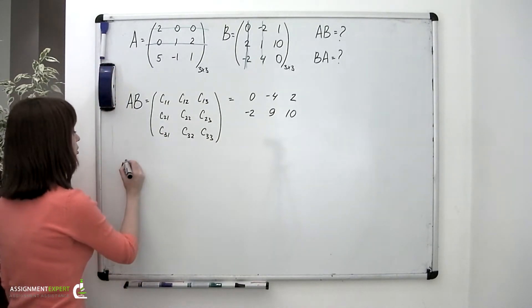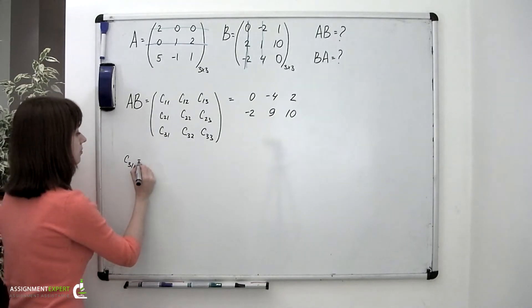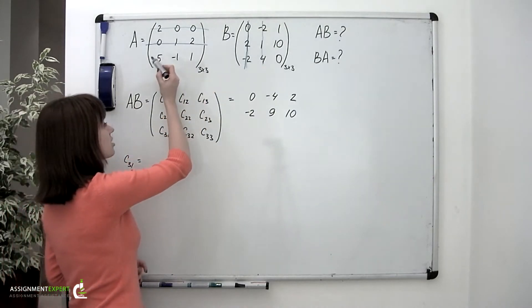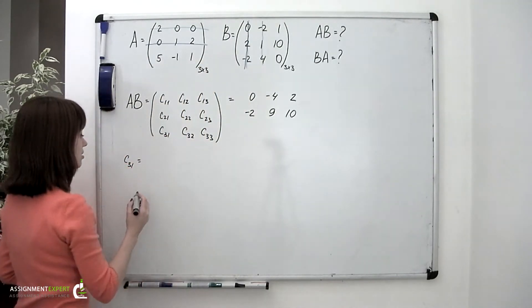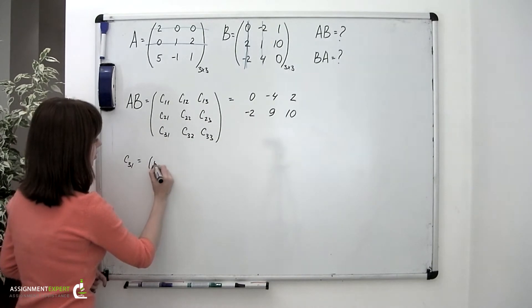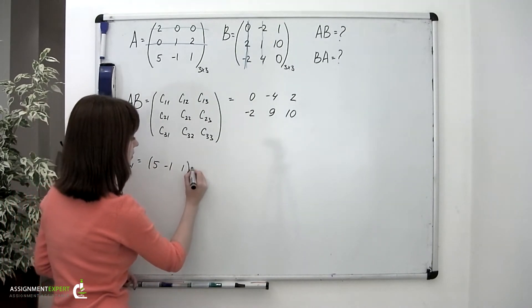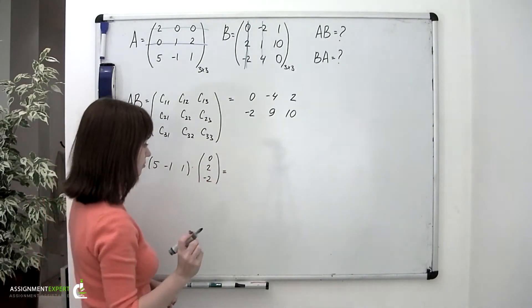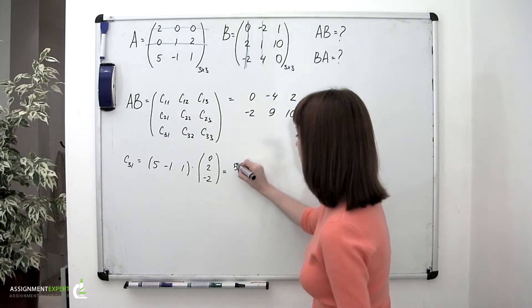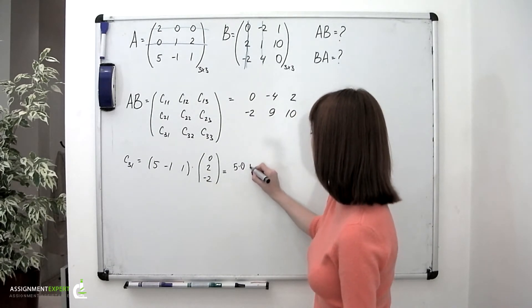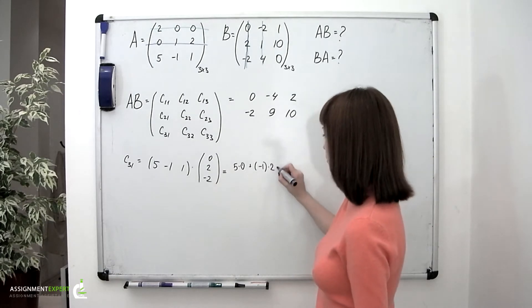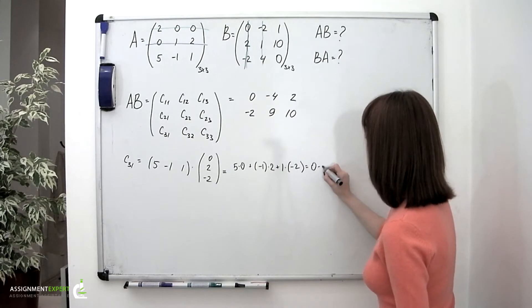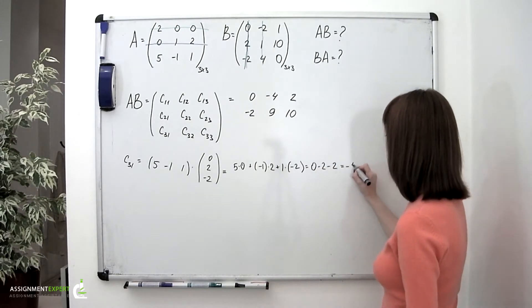Moving on to the third row. C sub 3,1 is equal to the product of the third row of the first matrix and the first column of the second matrix: 5, negative 1, and 1 times 0, 2, and negative 2. We have 5 times 0 plus negative 1 times 2 plus 1 times negative 2, which is 0 minus 2 minus 2, equal to negative 4.